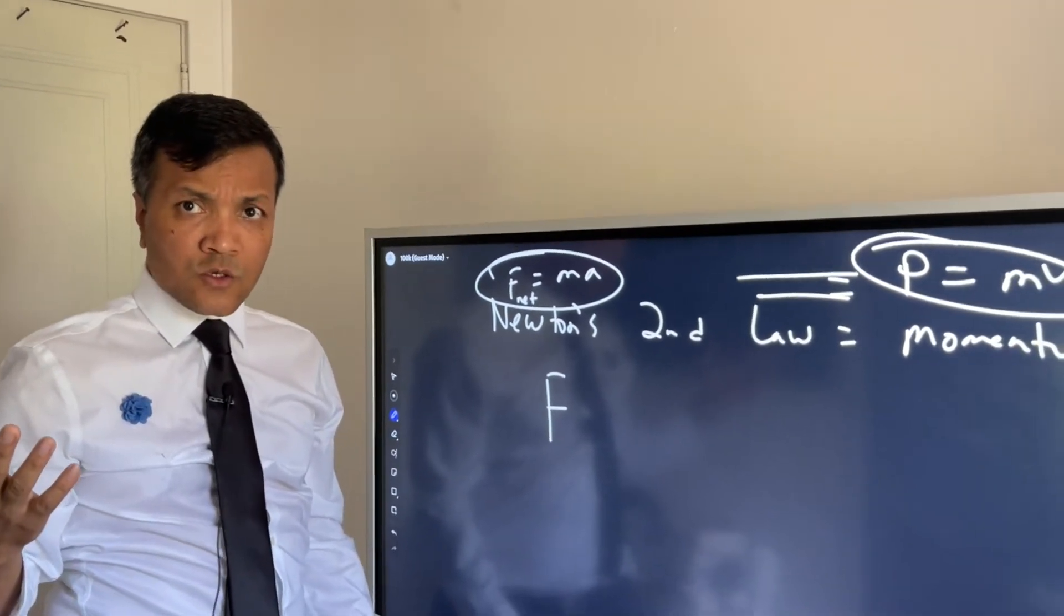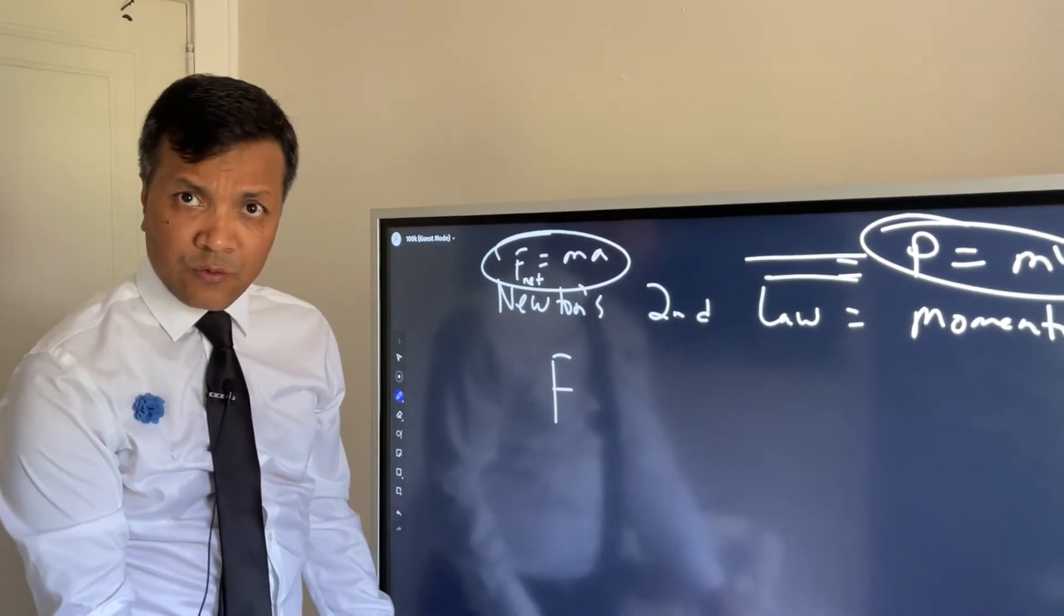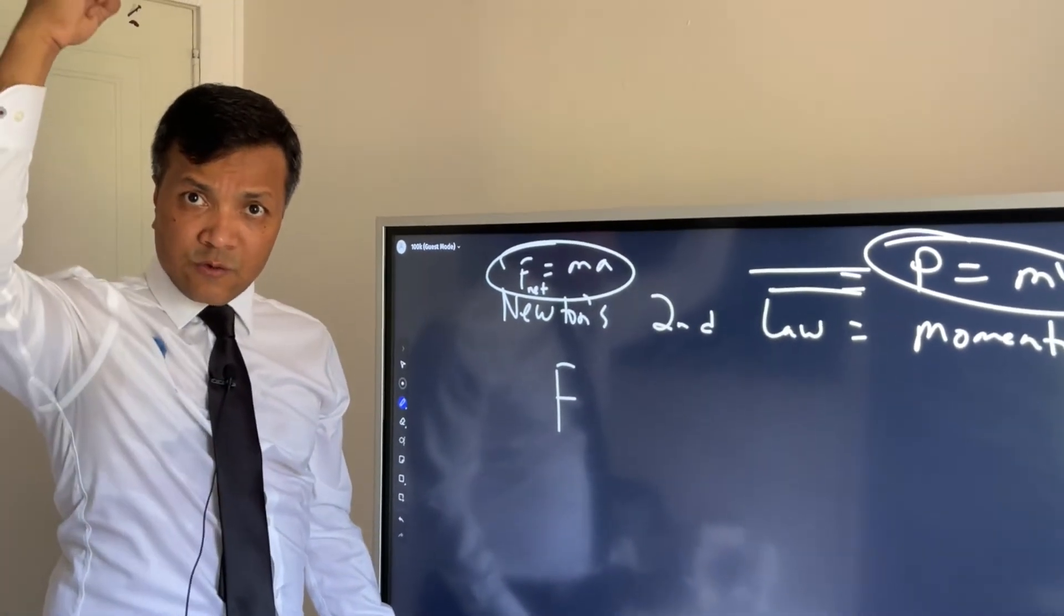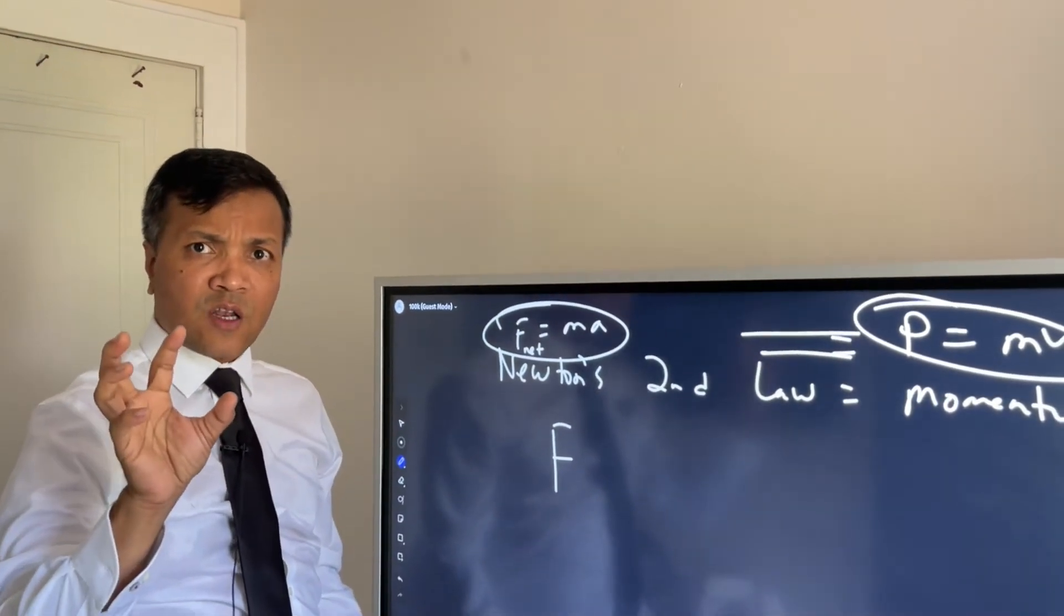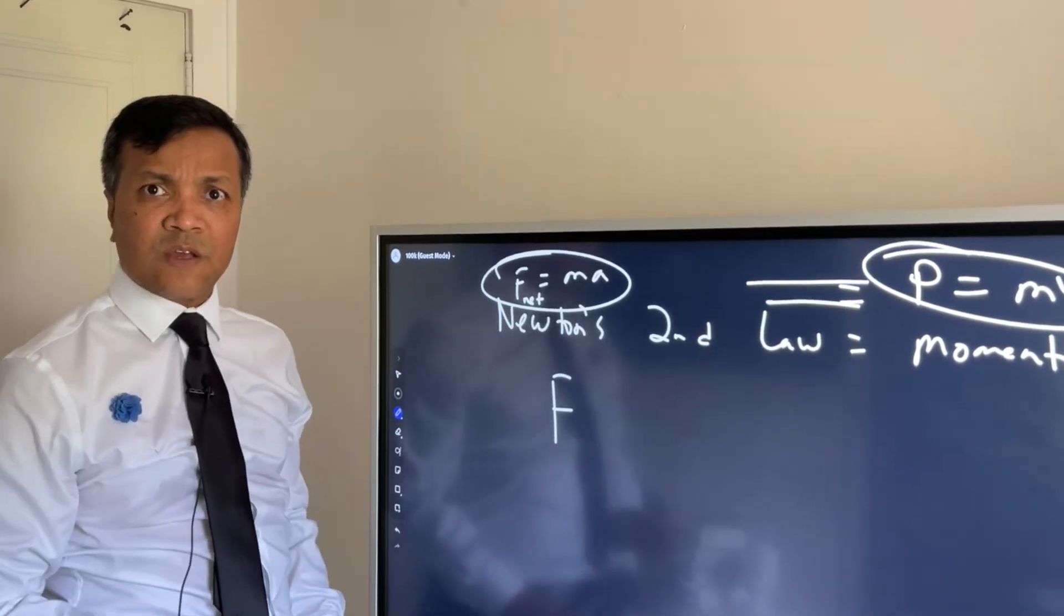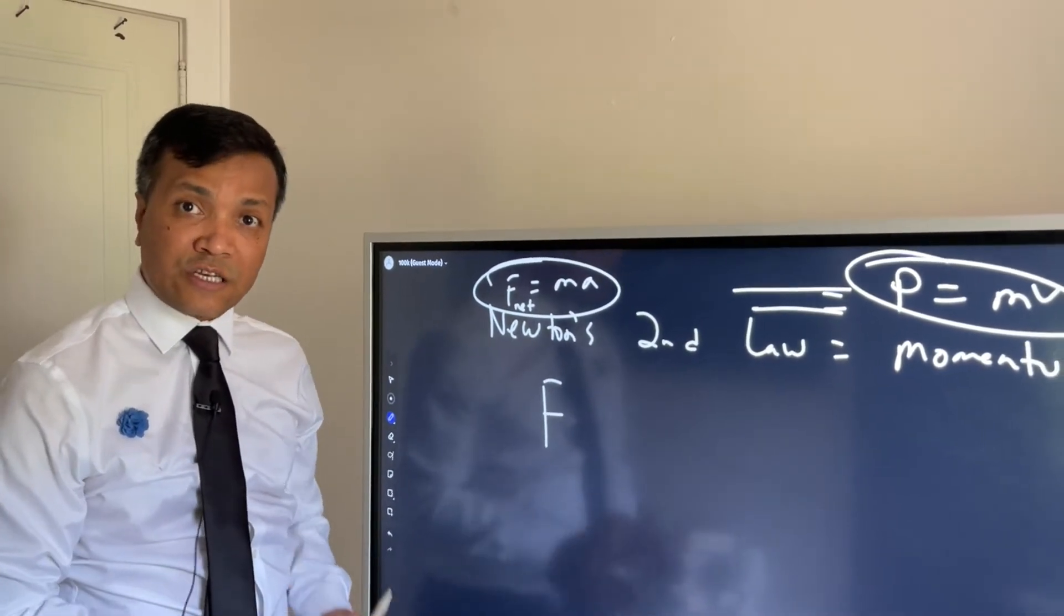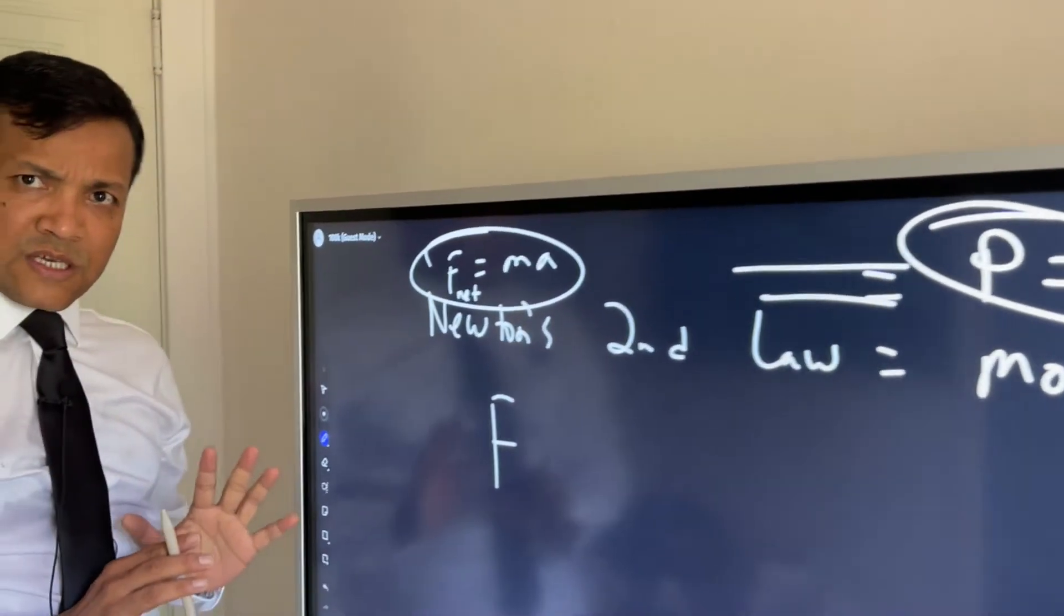So the second question was: apple falls and touches the ground, why doesn't the moon touch the ground? Because apple's initial velocity was zero, moon's velocity is not zero. Velocity is what keeps moon from hitting the earth.